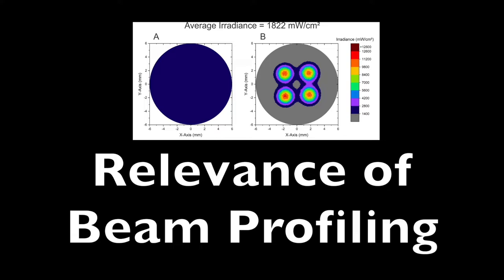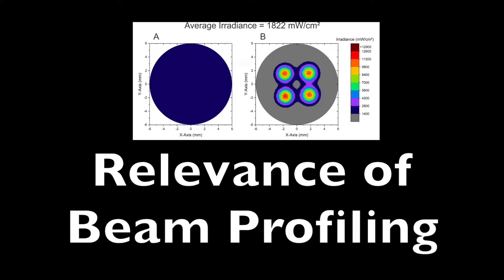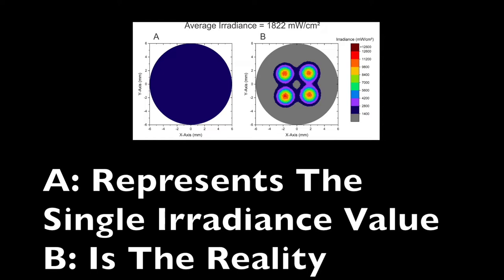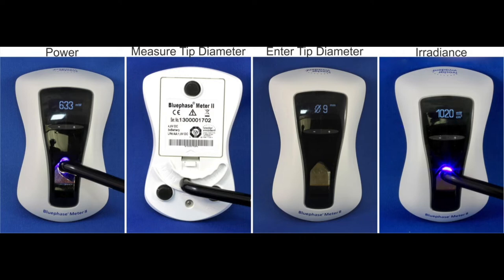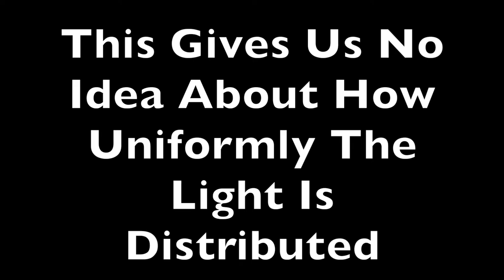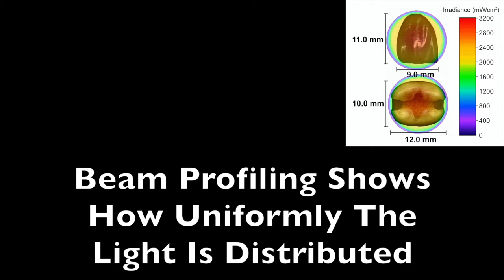For too long we've been focused on the average irradiance across the tip of a curing light. In this image, A represents the single irradiance value that we use, and B is the reality we see in beam profiling. This commonly used average irradiance value is obtained by taking the power from the curing light and dividing it by a defined tip area or the area of the radiometer sensor. But this only gives us a single average irradiance value and gives us no idea of the distribution of the light across the light tip. For that, you need to do beam profiling.